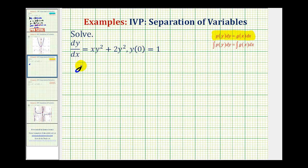So we would have dy equals, we're going to factor this, so we'll have y squared times the quantity x plus two times dx.